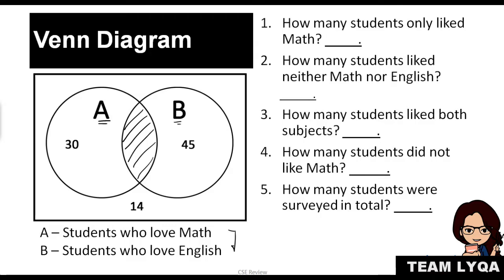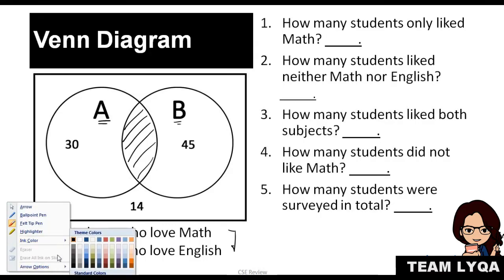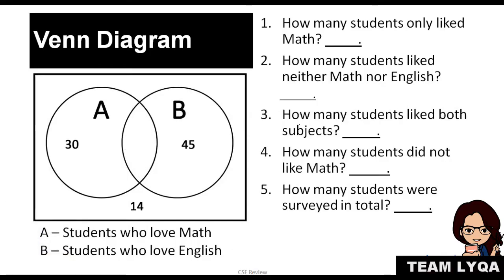The best way to deal with Venn diagrams is to answer the questions that usually come up. Question 1: How many students only like math? The key word here is 'only.' When you see 'only,' it means they don't like any other subject — just math. Looking at the Venn diagram, the 30 is in circle A with no intersection with B, so the answer to number 1 is 30.